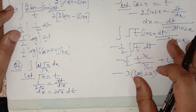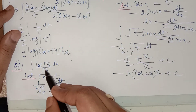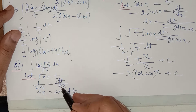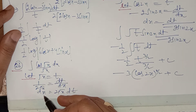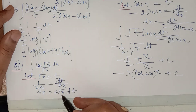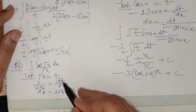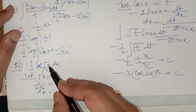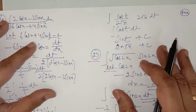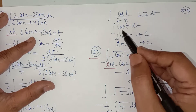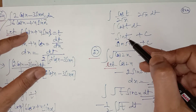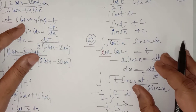Question number 26 is somewhat easy. You can let root x equal to t; dt upon dx will be 1 upon 2 root x. Replace the value of dx as 2 root x dt in the question. This root x cancels out. You only have to integrate cos t, which equals sine t. Replace the value of t.